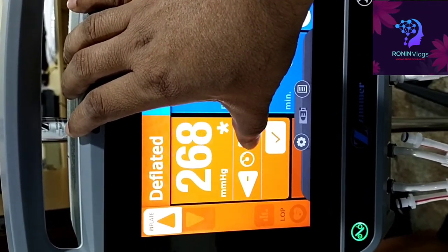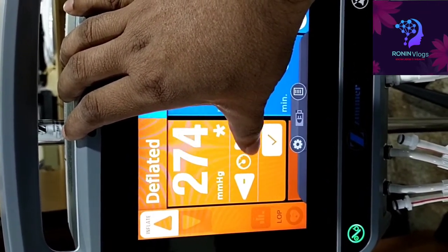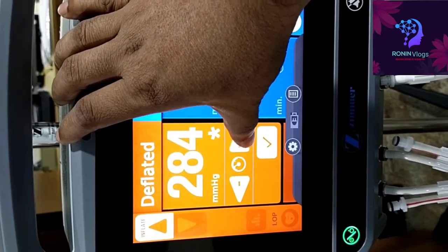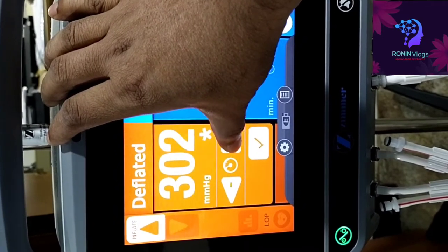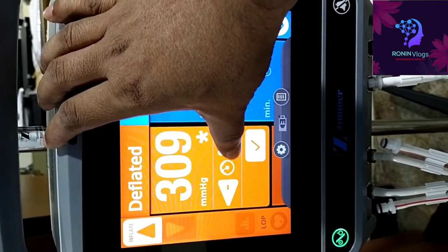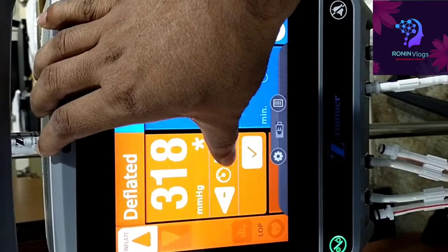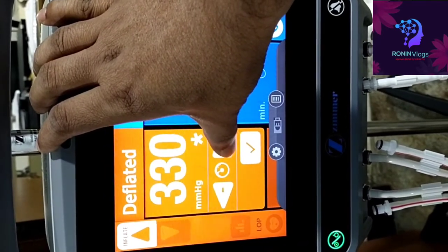Main use during the surgery, the blood flow we need to stop. That time we are using this one. Mainly use for the ortho cases. During the surgery, when we need to stop blood flow to the surgery area, that time we are using this tourniquet.